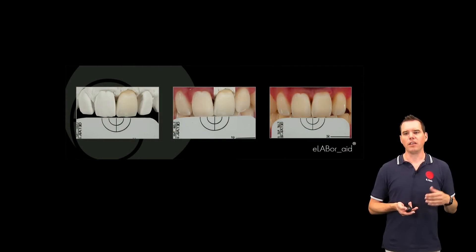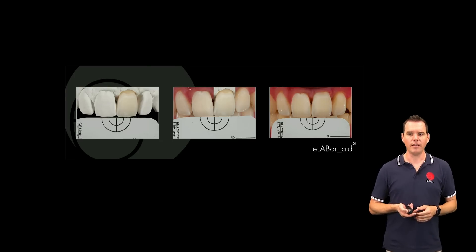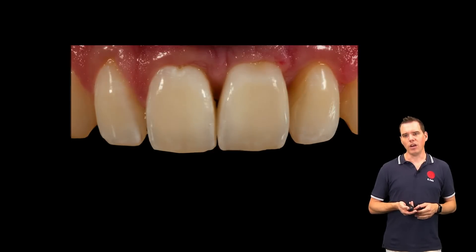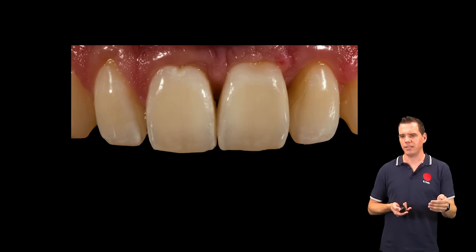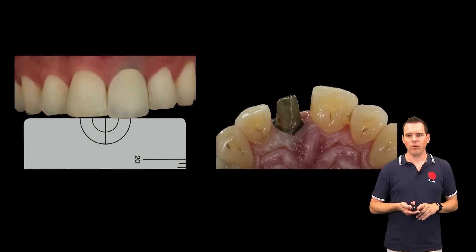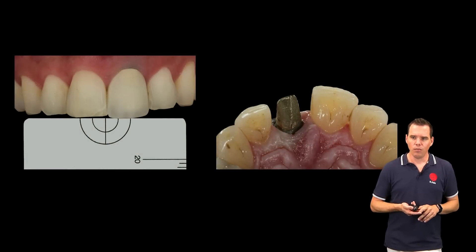You photograph with a white balance grey reference card and with polarized light. You can photograph the restoration on the model — that's the left image — then in the middle it's been digitally tried in, and on the right hand side is the final result. We don't use shade guides for this anymore — we make our own custom color, because of all the flaws that shade guides have.